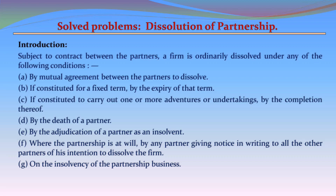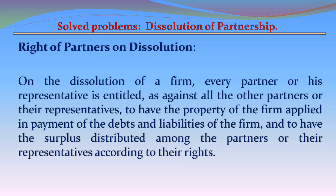D. By the death of a partner. E. By the adjudication of a partner as an insolvent. F. Where the partnership is at will, by any partner giving notice in writing to all the other partners of his intention to dissolve the firm. G. On the insolvency of the partnership business itself.